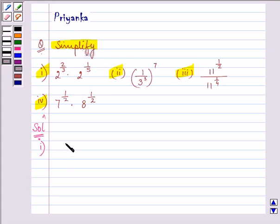The first part is to simplify 2 raised to the power 2 by 3 multiplied by 2 raised to the power 1 by 5. Now after seeing the question, one of the properties of the base and exponent comes to mind: when the base a to the power p gets multiplied by a to the power q, we can write it as a to the power p plus q. That means we can have a common base and add the exponents.